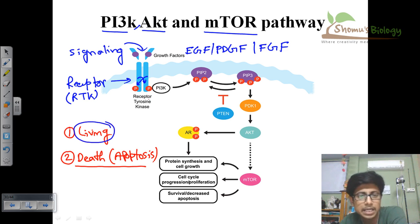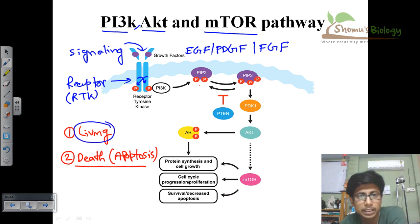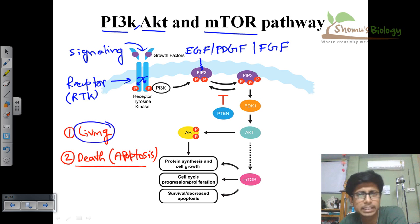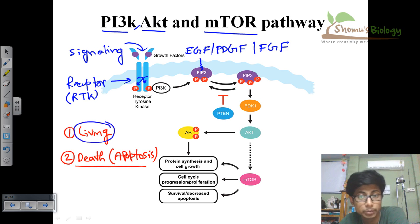Once cross-phosphorylation is complete, it activates what is called PI3 kinase. Once PI3 kinase gets activated from this tyrosine kinase phosphorylated state, it converts PIP2 into PIP3. PIP2 is phosphatidylinositol bisphosphate — a membrane-embedded lipid molecule. Because it has two phosphate units, PI3 kinase adds another phosphate group to convert PIP2 to PIP3. Previously it had two phosphates; now kinase adds one more to make PIP3, giving three phosphates on the phosphatidylinositol.